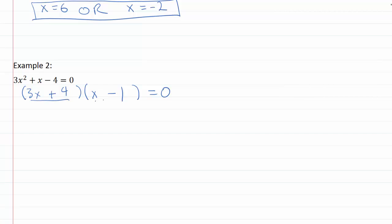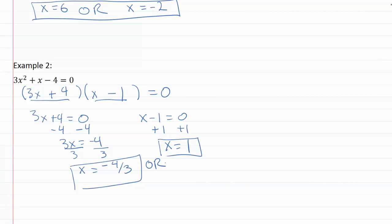So three x plus four equals zero, and x minus one equals zero. Minus four minus four, three x equals negative four, divide by three, divide by three, x equals negative four thirds. Plus one, plus one, x equals one. So there's my two possible solutions. Either one of those works.